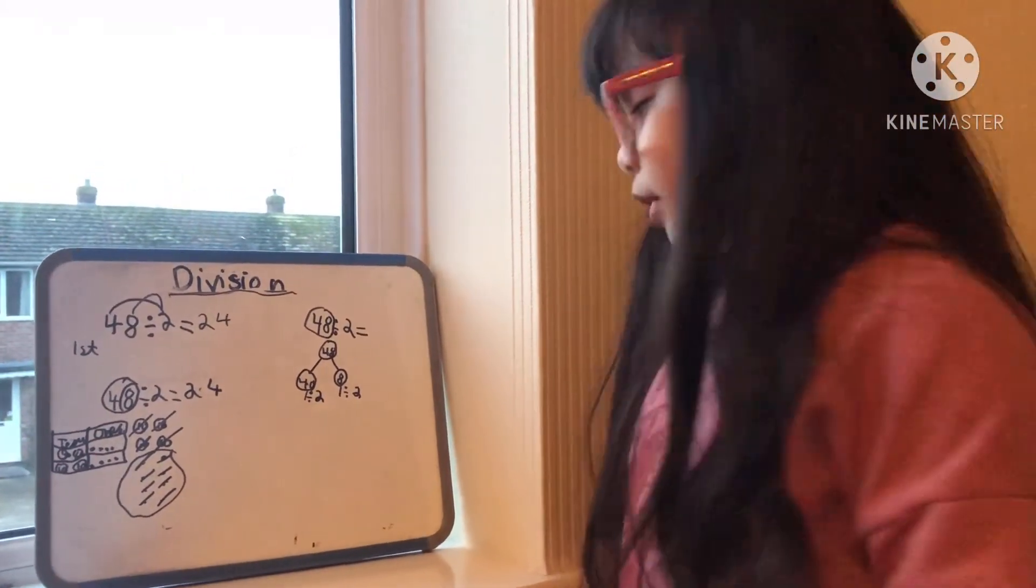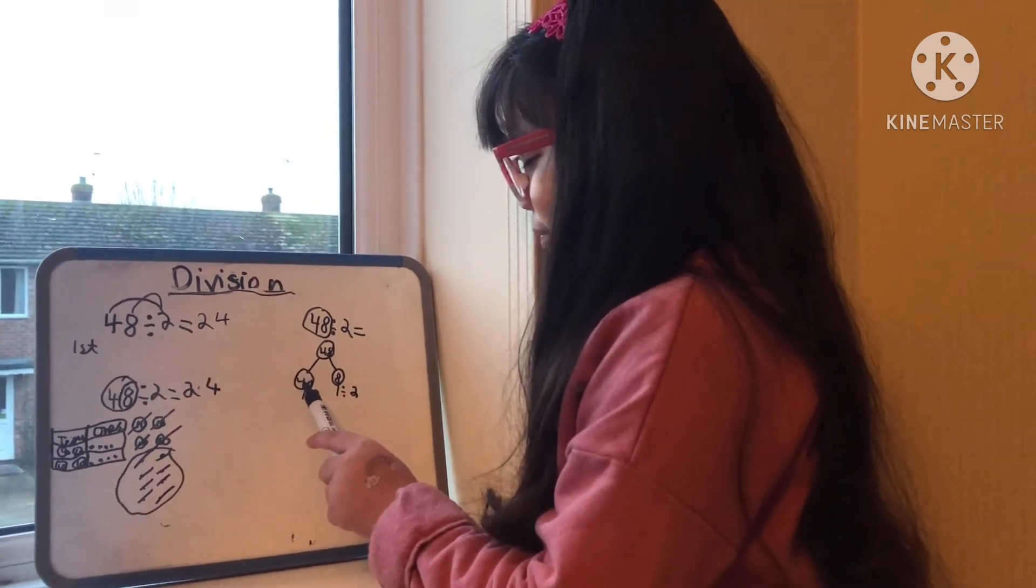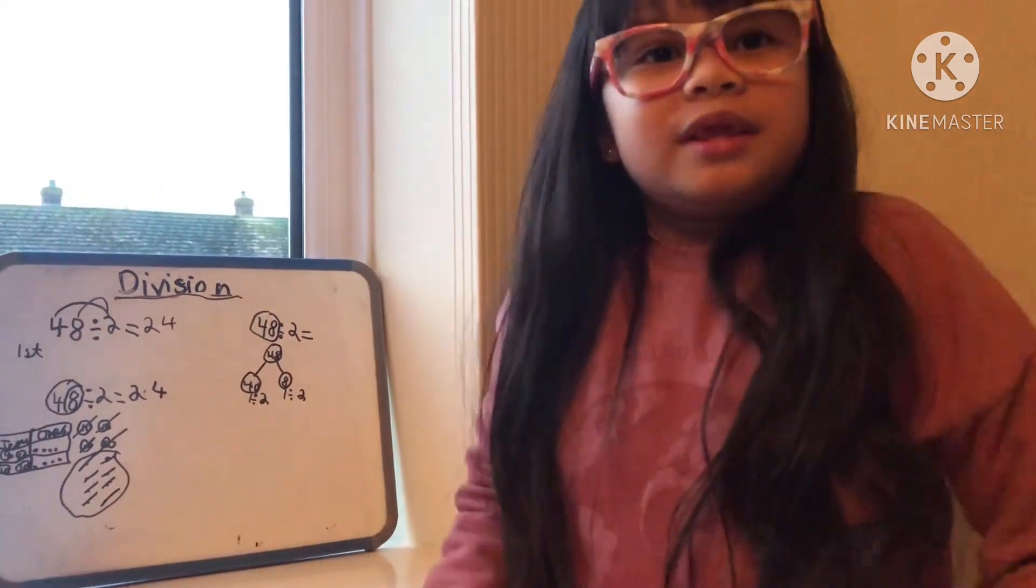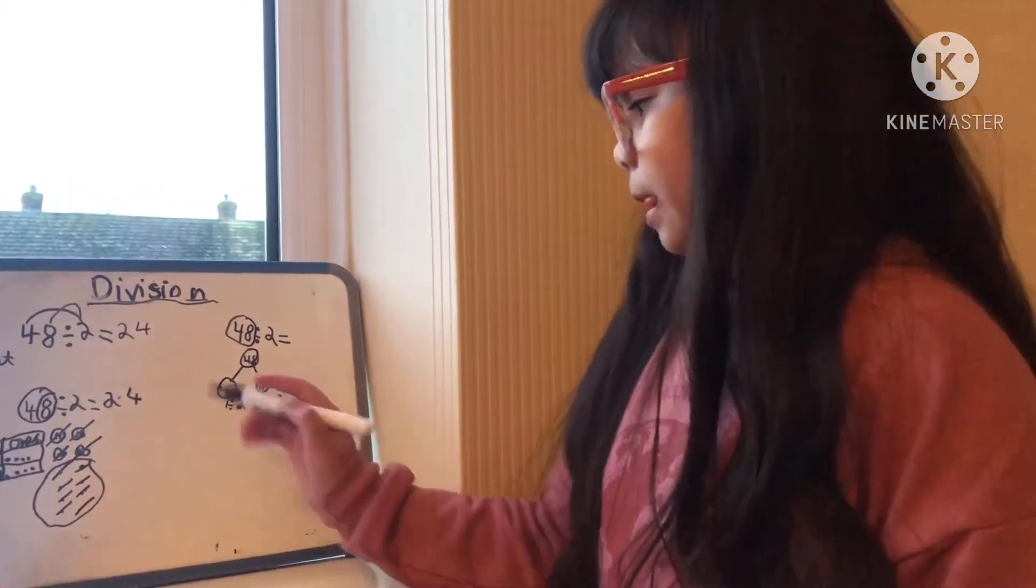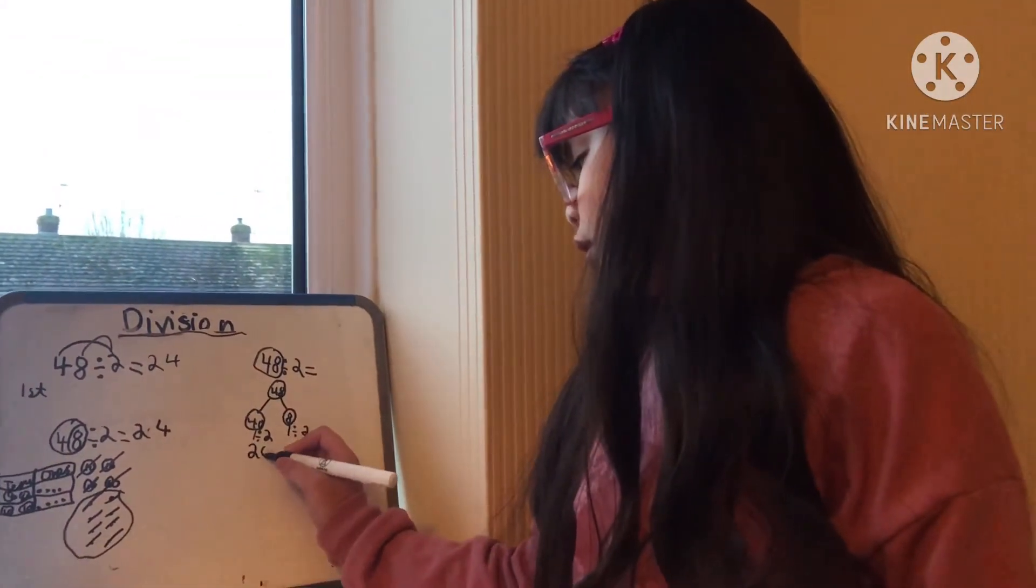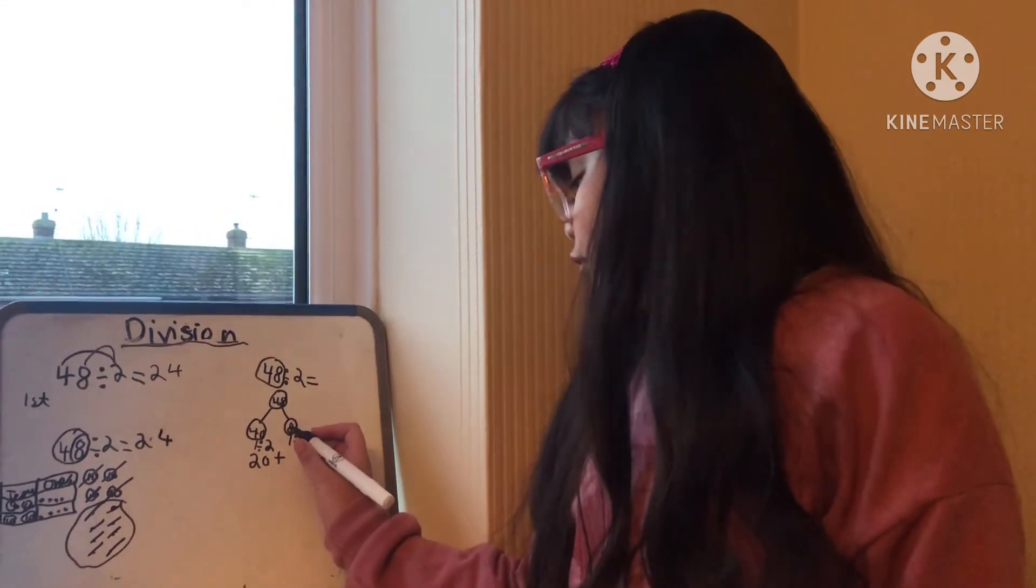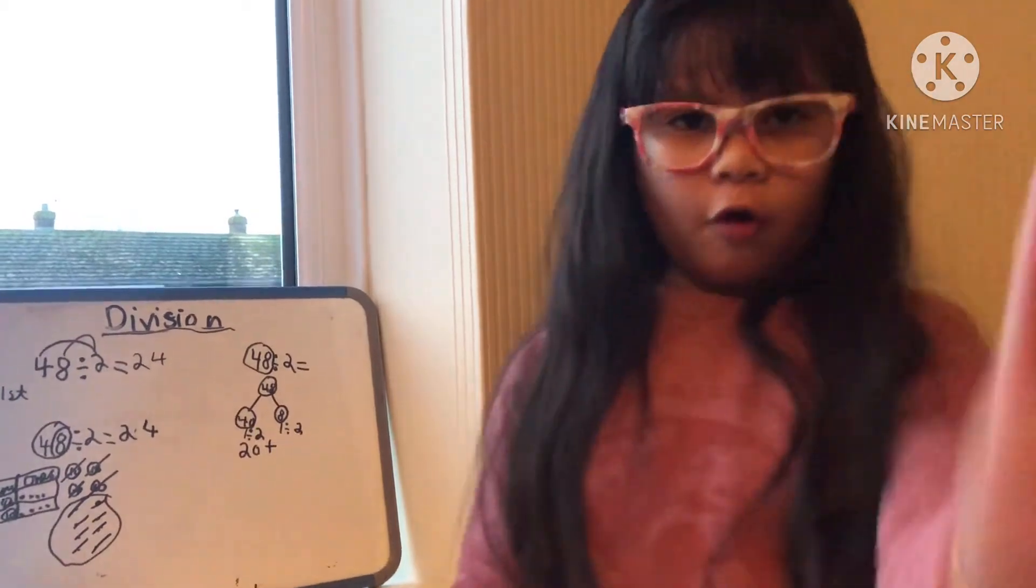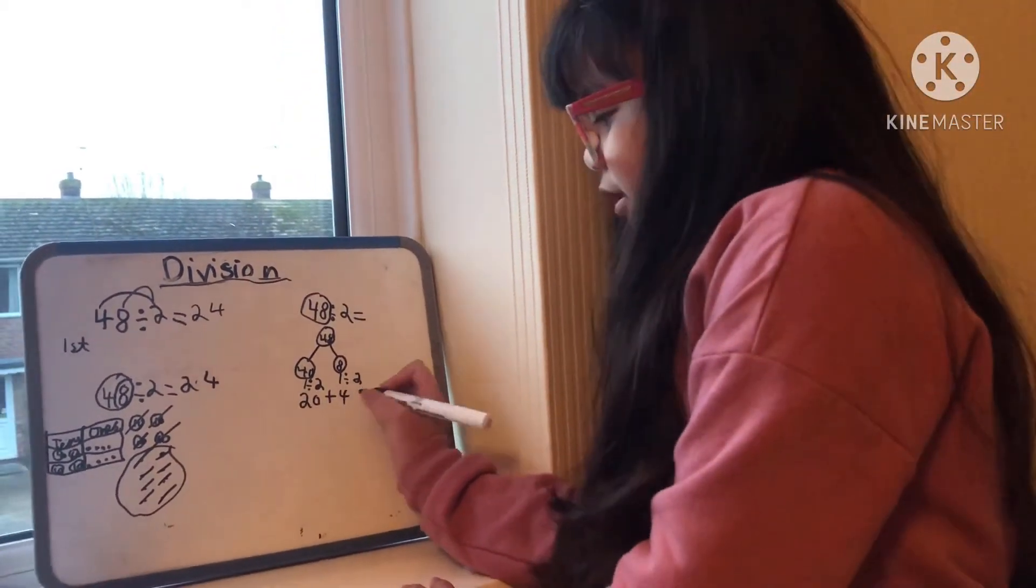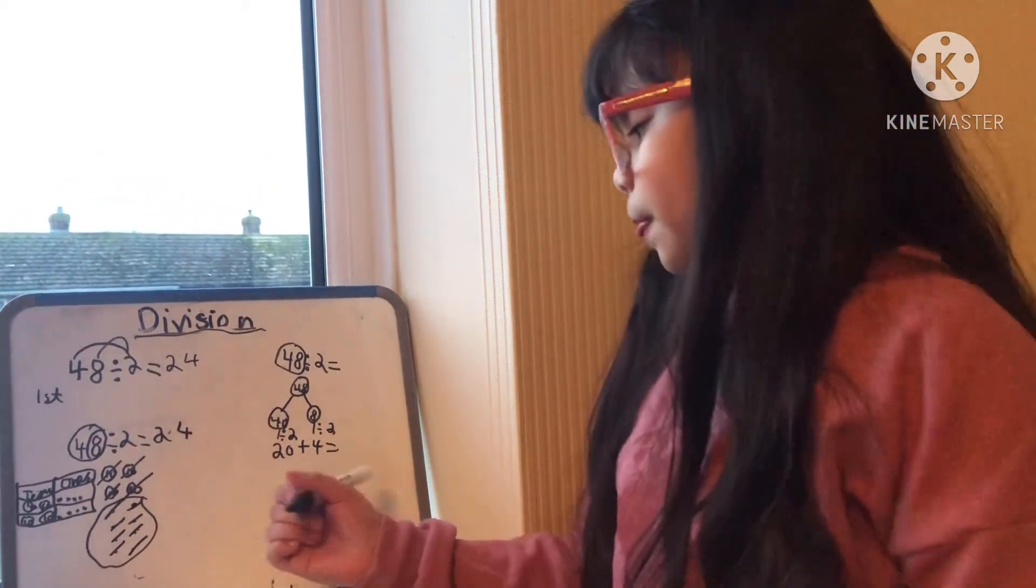So now let's start on the tens. What's 40 divided by 2? It's 2 tens or 20. And then we put the plus sign. And 8 divided by 2 is 4, that's the easiest one.